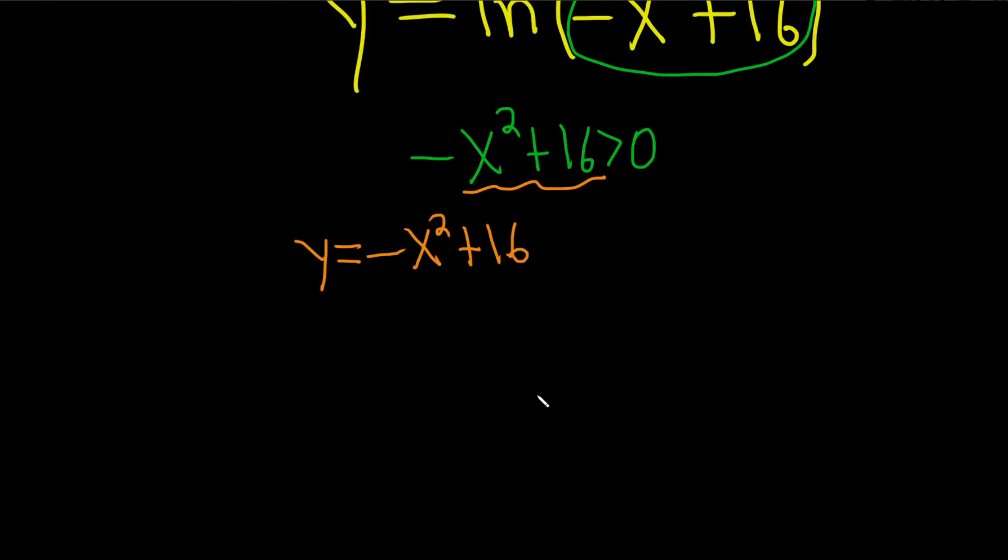And now the question becomes when is y greater than zero? Well, x squared by itself, if you were to graph that, that's just like a parabola. Negative x squared is an upside down parabola.